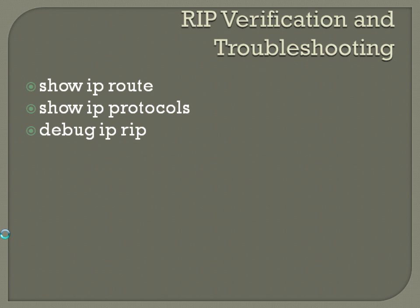For RIP verification and troubleshooting, the main commands you'll need are: 'show ip route' to show the whole routing table, or 'show ip route' followed by a specific IP address to look at a particular network; 'show ip protocols'; and if you're trying to get RIP working and it's not, 'debug ip rip' turns on debug so you can see traffic line by line. Keep in mind that debug commands are very processor-intensive, so only leave them on while testing, and make sure to turn them off afterward using 'undebug all' or 'undebug' with your specific debug command.